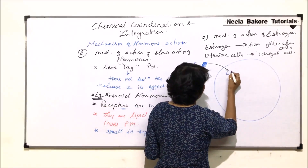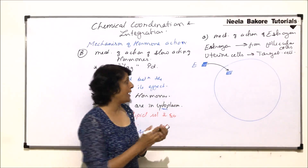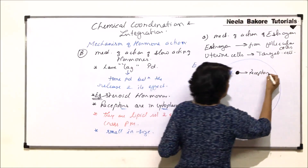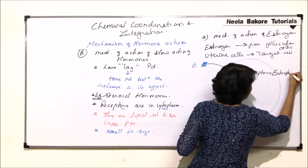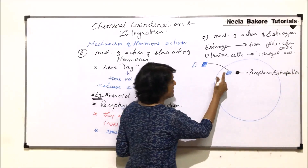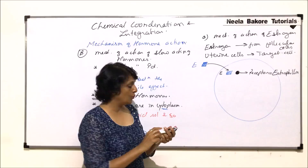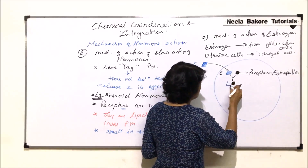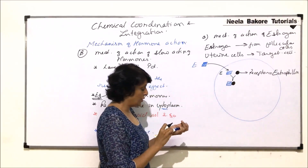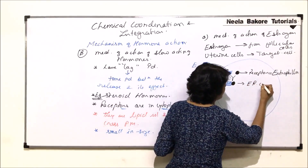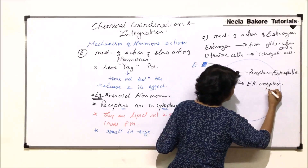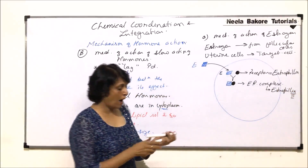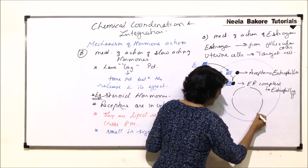After estrogen has entered through the plasma membrane, its receptor is in the cytoplasm. The receptor molecule is known as estrophilin. So the hormone, which is estrogen, binds to the receptor estrophilin. When the hormone binds to the receptor, a complex is formed — the estrogen-receptor complex.